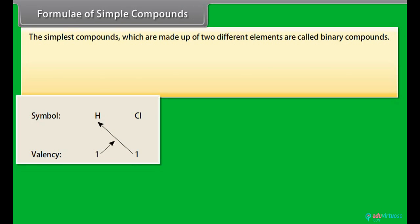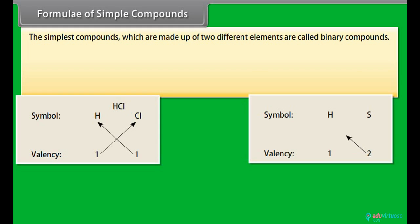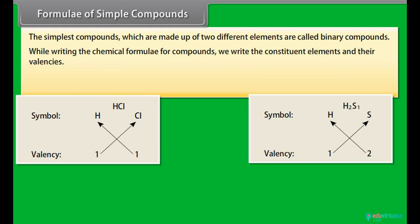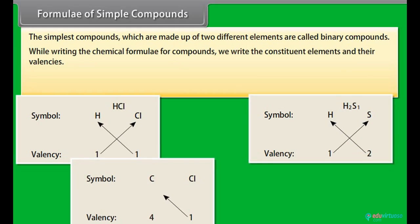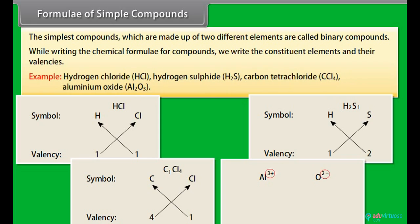Formula of Simple Compounds: The simplest compounds which are made up of two different elements are called binary compounds. While writing the chemical formula for compounds, we write the constituent elements and their valencies. For example, hydrogen chloride HCl, hydrogen sulfide H2S, carbon tetrachloride CCl4, aluminum oxide Al2O3.